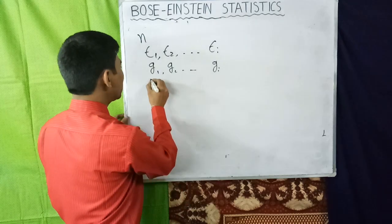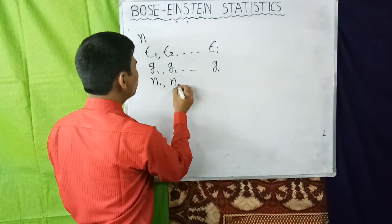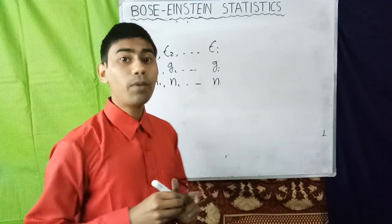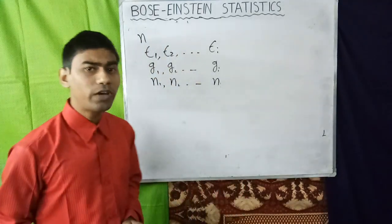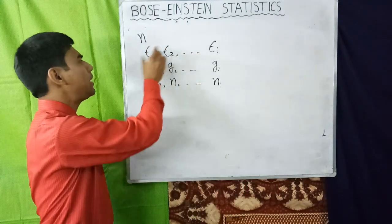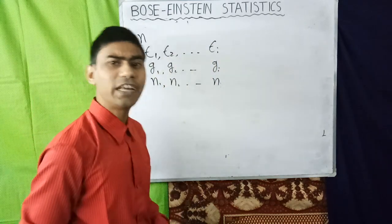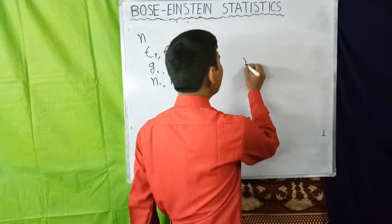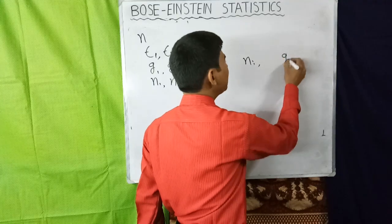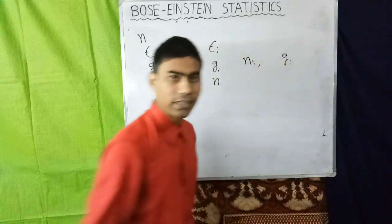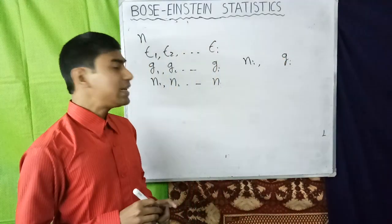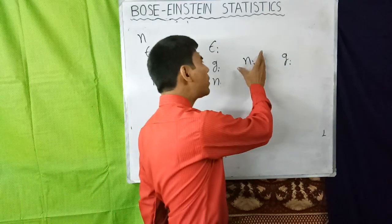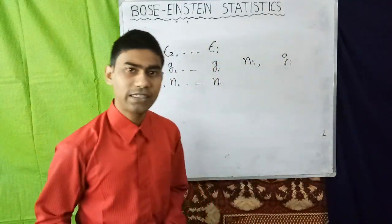Suppose N₁, N₂, ... Nᵢ are the number of particles corresponding to the energy level ε₁, ε₂, ... εᵢ respectively. So we have Nᵢ particles and Gᵢ states. Now the question is: how can we arrange this Nᵢ number of particles into Gᵢ states?